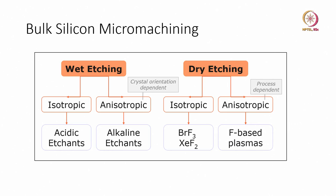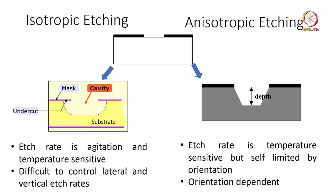In bulk silicon micromachining, there are two etching techniques: wet etching and dry etching. In wet etching, there is isotropic and anisotropic etching — anisotropic behavior depends on crystal orientation. In dry etching, anisotropic behavior is process-dependent. Wet etching uses acidic or alkaline etchants; dry etching uses fluorine-based plasmas, BrF3, or XeF2. Isotropic etch rate is sensitive to agitation and temperature and is difficult to control laterally; anisotropic etching is temperature-sensitive but self-limited by crystal orientation.